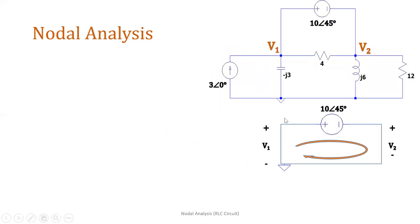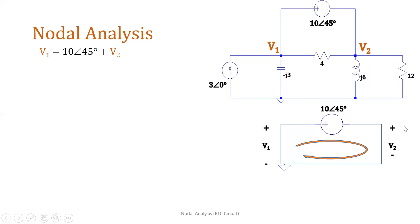Next, we bring back the voltage source which was taken out in our earlier equation. With this current direction, V1 is equal to 10∠45° plus V2. That is our second equation.